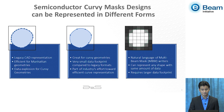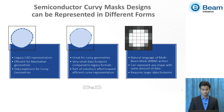The pixel-based format can also be another option for representing curvilinear mask shapes. It represents the natural language of multibeam mask writers. It does require a lot of data to represent the same mask, but it can be efficient in doing some of the internal computations. Some of the internal computations done today are already using this format.